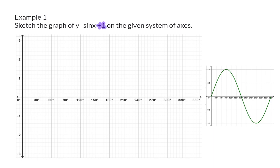And then apply the translation of plus one to this. This means that each one of our important points, so our intercepts with the axes and our turning points, have to move up one unit.